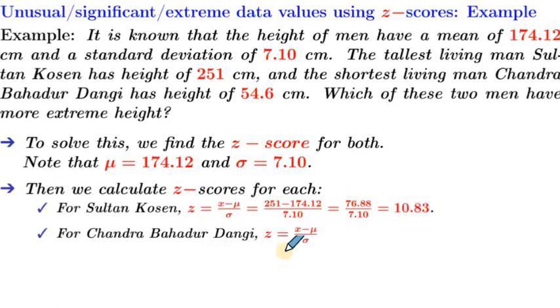Now for Chandra Bahadur Dangi, we have the formula for z. We need to plug in the numbers in our formula. Our x is 54.6, our mean is 174.12, and our standard deviation is 7.10. This whole term equals negative 119.52 over 7.10, which equals negative 16.83.